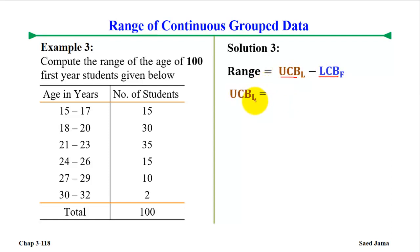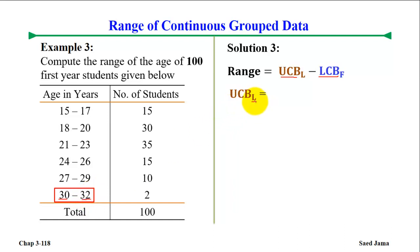So here, L means the last class and the last group. We identify the upper class boundary of the last class, and also identify the lower class boundary of the first class to apply to our range formula.